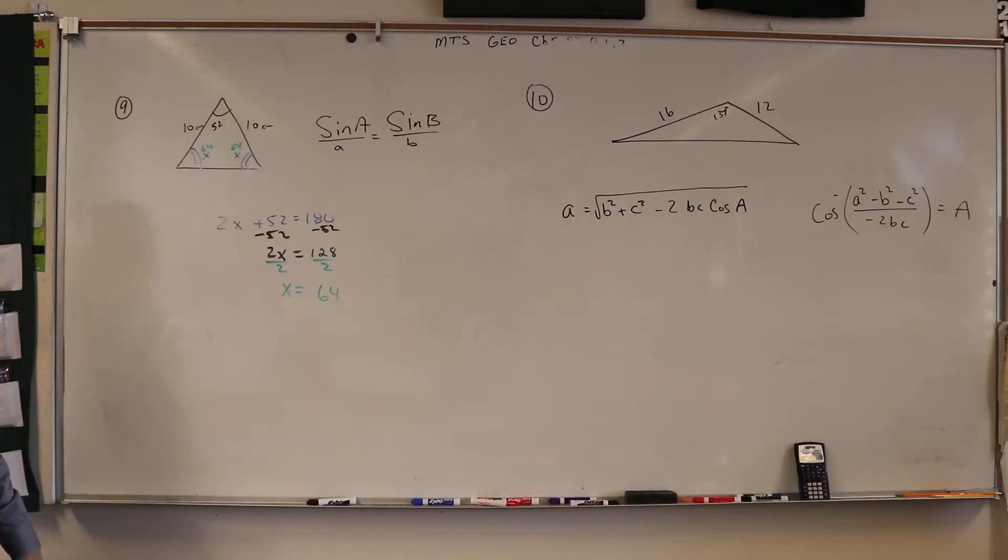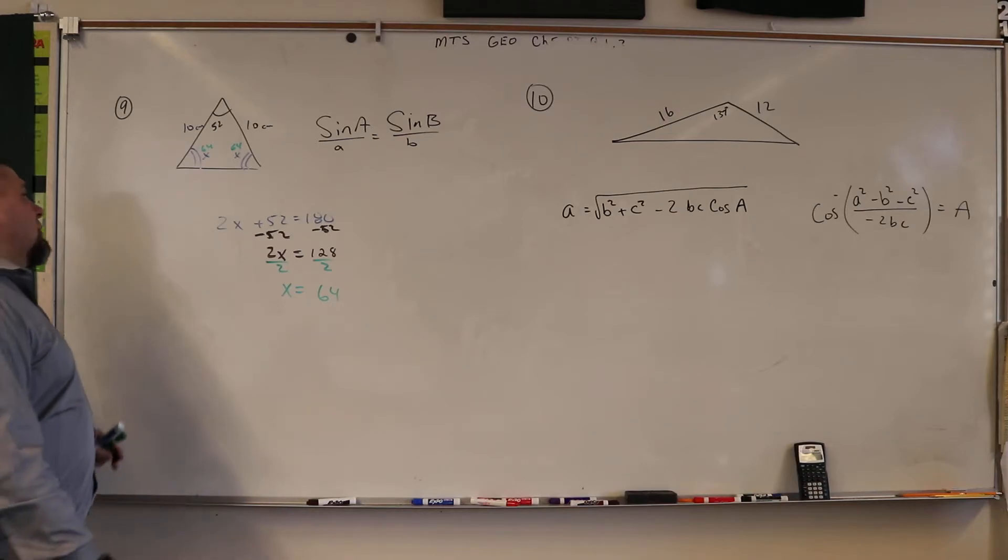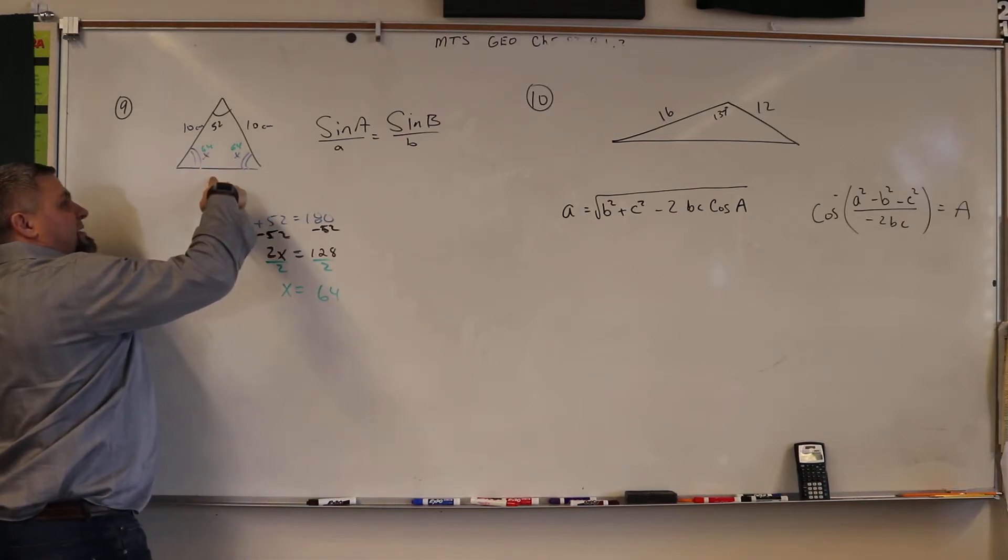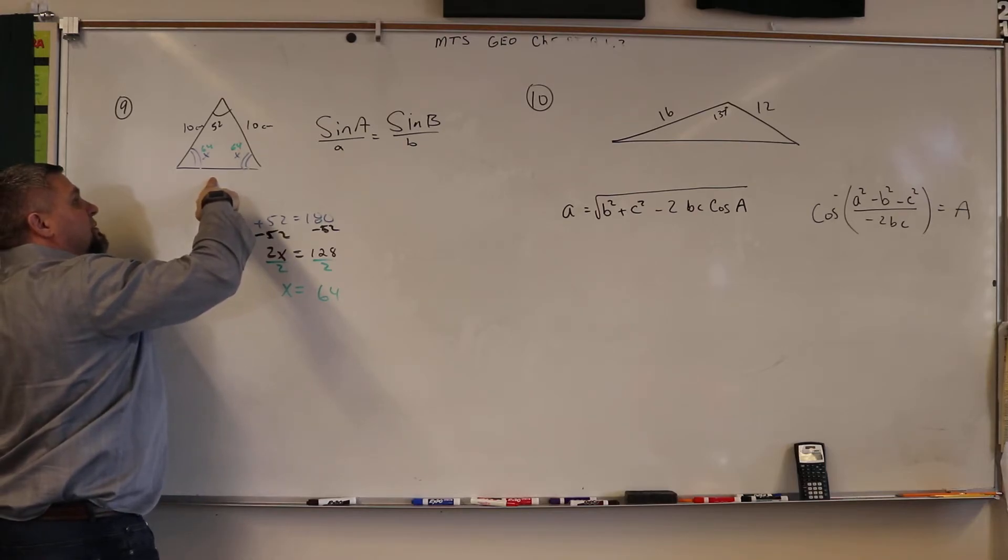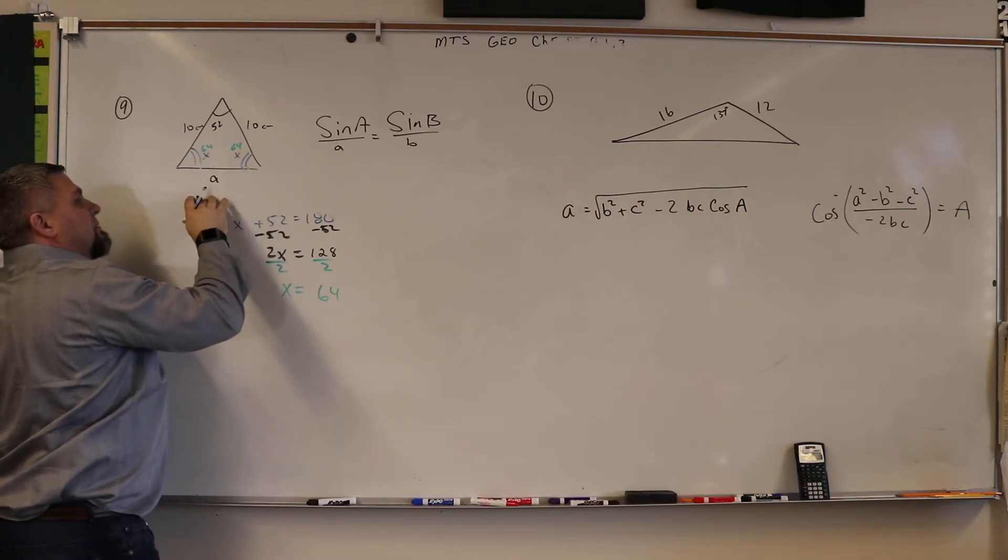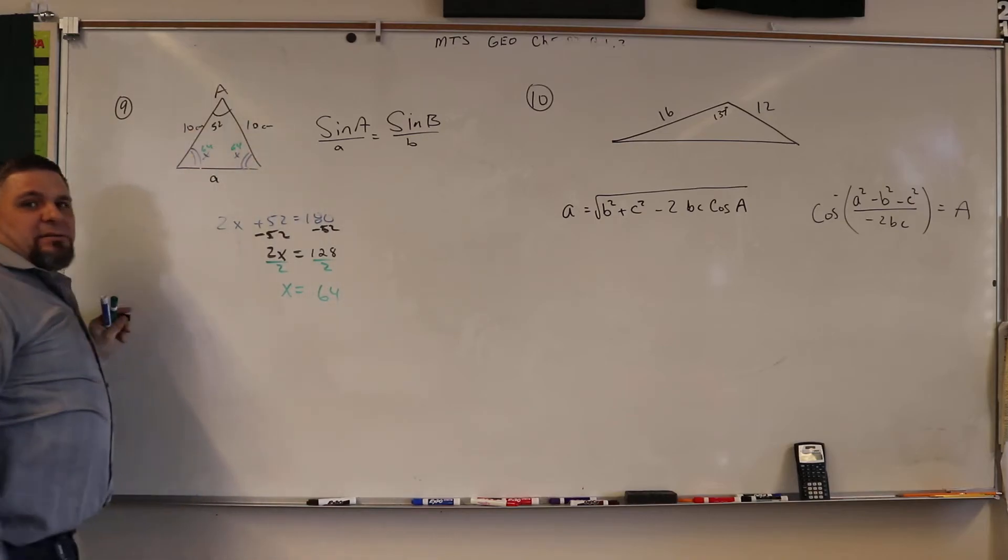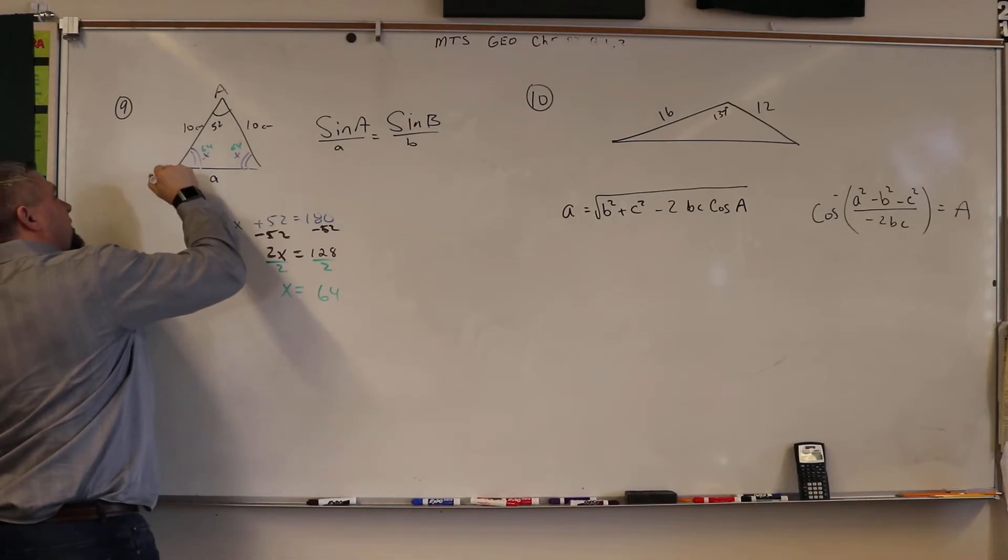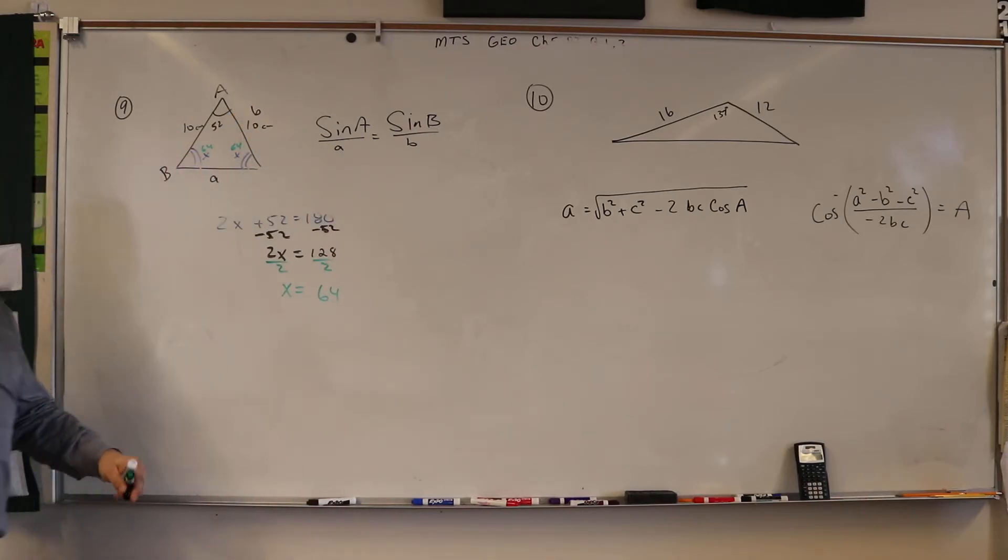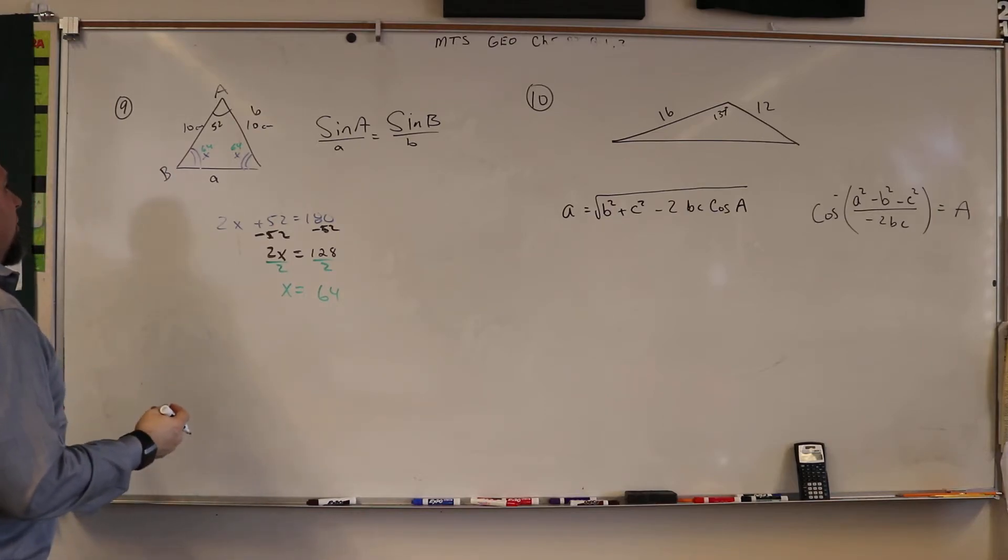We're looking for this side, right? So we're going to call this a and we'll call this a. And then we just got to choose one to be b, b, and b. So now we want to put whatever one we were looking for on top.